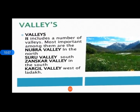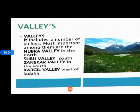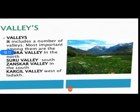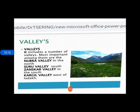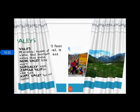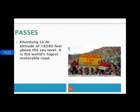The beautiful valleys of Ladakh include Nubra valley, Suru valley, Zanskar valley, and Kargil valleys. These beautiful valleys make Ladakh a tourism center. The Khardung La pass at an altitude of 18,380 feet above sea level is the world's highest motorable road, and people prefer to travel it on bikes.